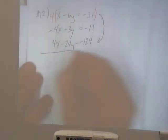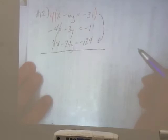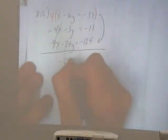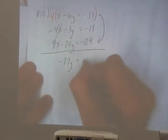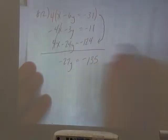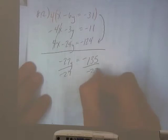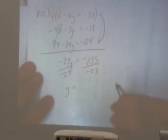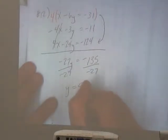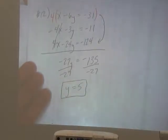Now if I combine these two equations, my x is getting eliminated. So I got negative 27y is equal to negative 135. Yeah. So if I divide by negative 27, y is equal to number 5. Okay.